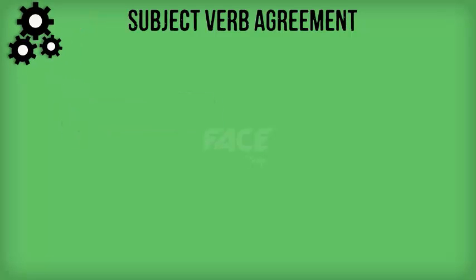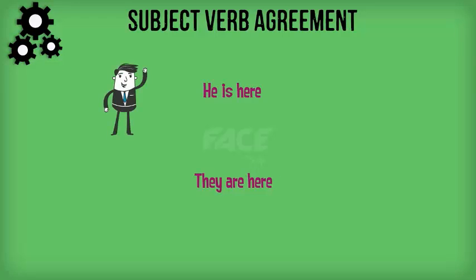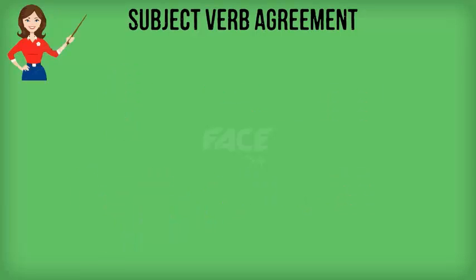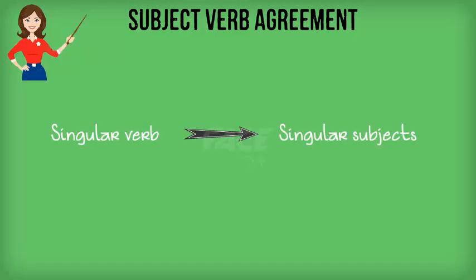Another example: 'He is here' versus 'They are here.' In the first sentence, the subject 'he' is singular and hence the auxiliary verb is also singular: 'is.' The basic rule to remember is: use a singular verb for singular subjects and a plural verb for plural subjects.